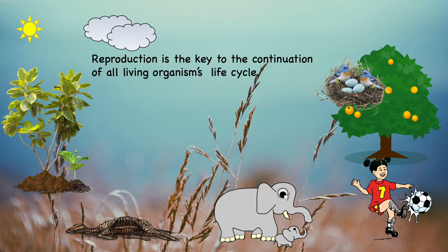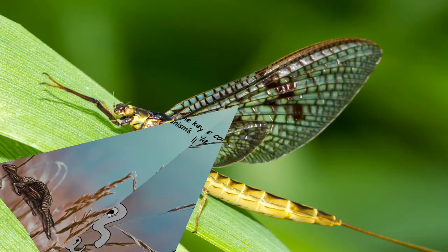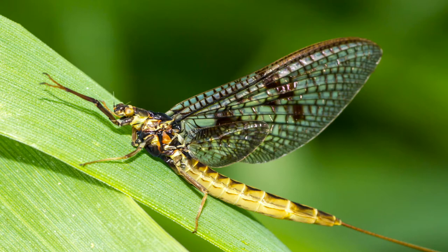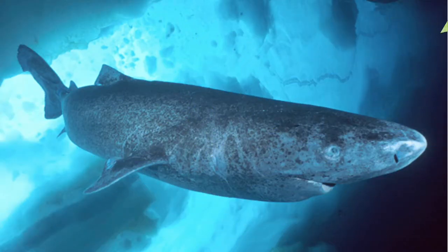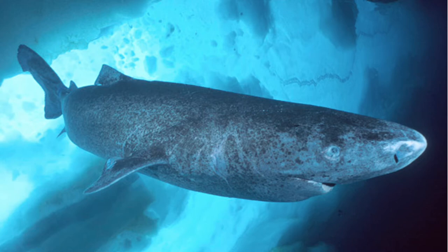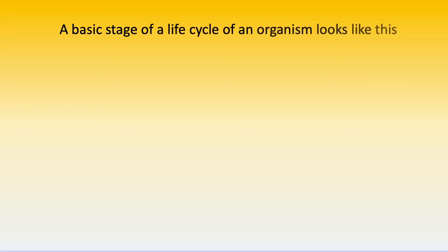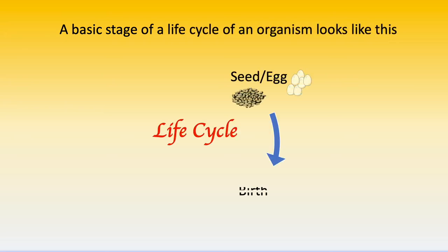Some lifespans are short whereas some take a longer lifespan. For example, mayflies live only for 24 hours, while a Greenland shark lives up to an average of 272 to 512 years.